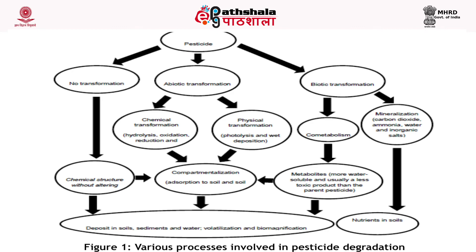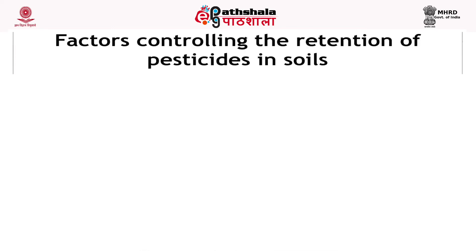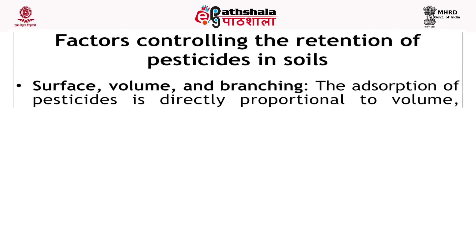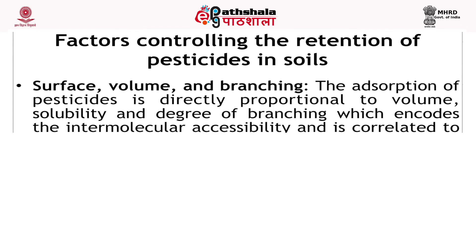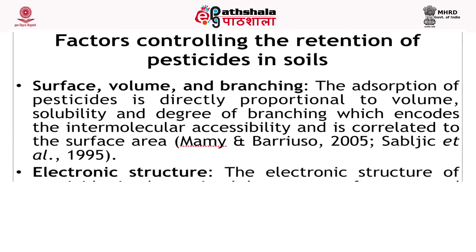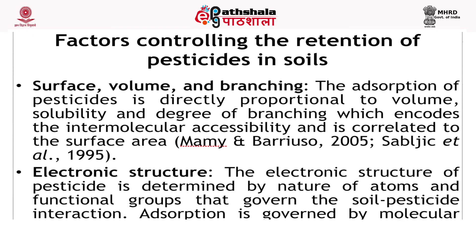Figure 36.1 shows the process involved in pesticide degradation. Next, factors controlling the retention of pesticide in soil: the physicochemical properties of pesticide control their retention in the soil as described below. First is surface, volume and branching: the adsorption of pesticide is directly proportional to the volume, solubility and degree of branching, which encodes the intermolecular accessibility and is correlated to the surface area. Next is electronic structure: the electronic structure of pesticide is determined by the nature of atoms and functional groups that govern the soil-pesticide interaction.